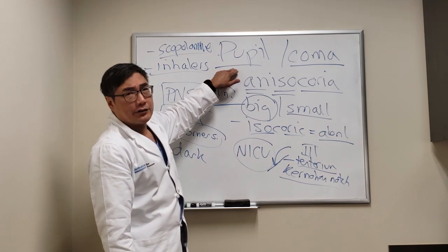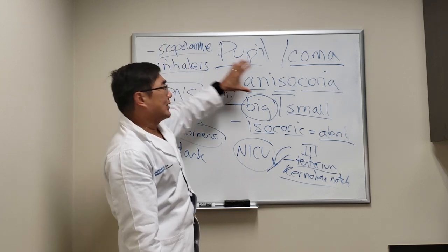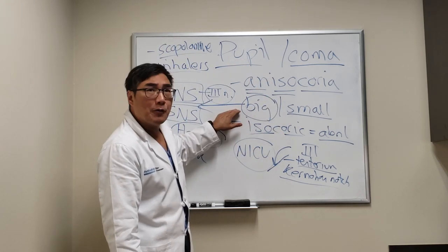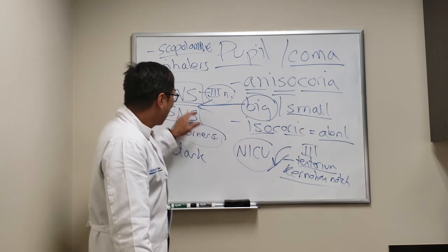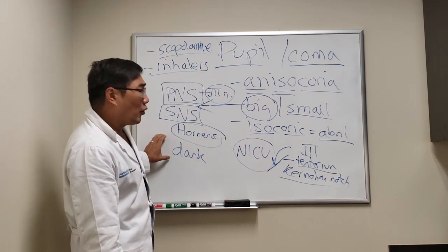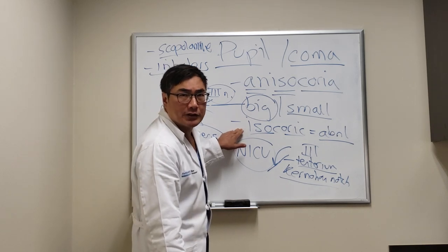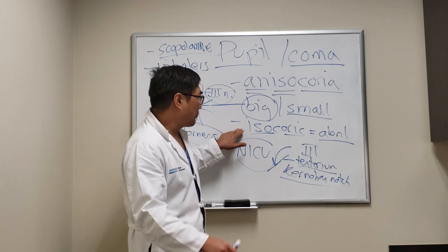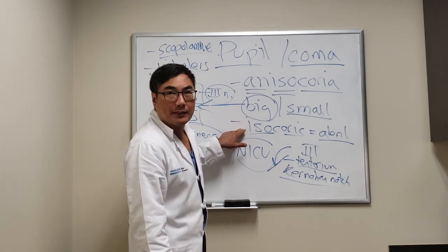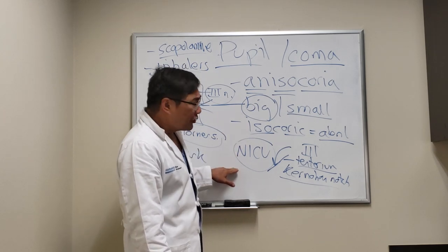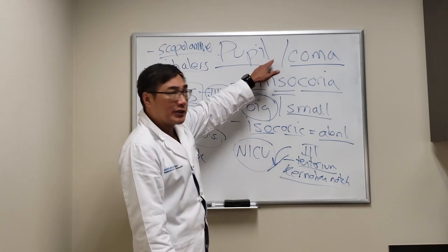In summary: a pupil abnormality in a comatose patient is a bad sign. First, rule out pharmacologic dilation to avoid inappropriate interventions. A big pupil with anisocoria greater in the light is a parasympathetic problem — third nerve. A small pupil with anisocoria greater in the dark is Horner syndrome. If isochoric and pinpoint, that's pontine pupils, often with spastic tetraparesis and hyperreflexia. If isochoric and bilaterally dilated, that's a midbrain problem — be concerned about the false localizing sign, herniation, and Kernohan's notch in the acutely comatose patient.